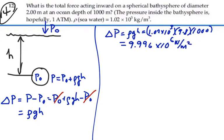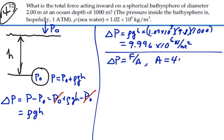And that would be the difference in pressure between the outside and the inside of the bathysphere. That difference in pressure should be equal to the force per area on the bathysphere. And in this case, the area should be equal to 4 pi r squared.